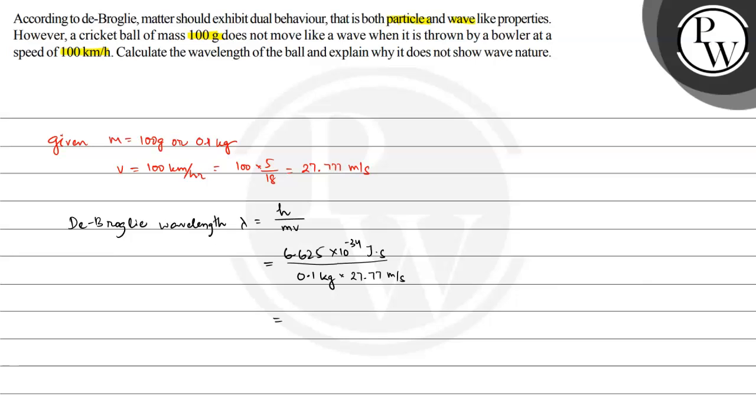So the value is coming from this: this is 2.38 multiplied by 10 raised to the power minus 34 meters. Alright. So the wavelength is 2.38 times 10 raised to the power minus 34 meters.